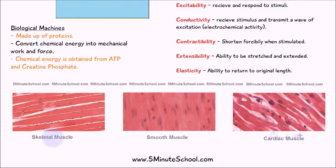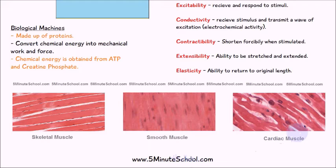Those are the five functional characteristics of muscles. Three diagrams are included showing the histological structures of skeletal muscle, smooth muscle, and cardiac muscle. The next video will focus on these three muscle types and the differences between them in much more detail.